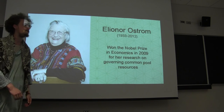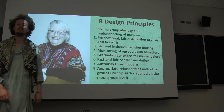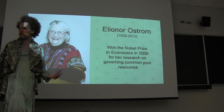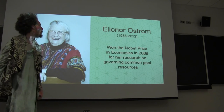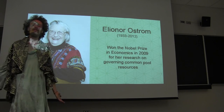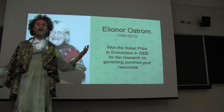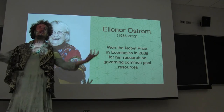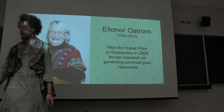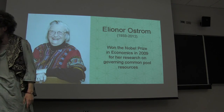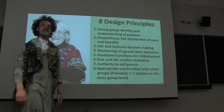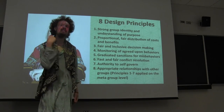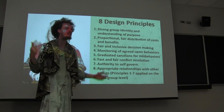Eleanor Ostrom won the Nobel Prize in economics in 2009 for her research on governing common pool resources. If you're going to summarize the books and books and books that she wrote, it would be these eight things — eight noble truths, I suppose. We like lists of things.